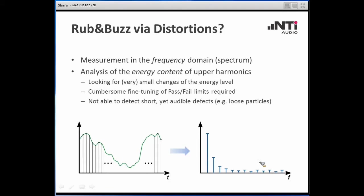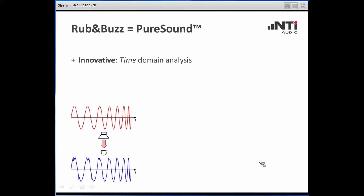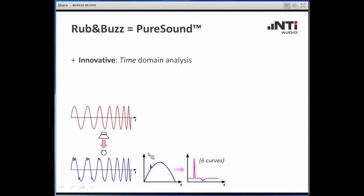For these types of defects — which are very clearly audible — you need a different method. NTI Audio was actually the first company to introduce a real, reliable, well-working solution. The core principle is that it works in the time domain, in contrast to the frequency domain distortion measurement. We create a GlideSweep signal, transfer it through the speaker, pick it up with the microphone, and amplify any disturbance — whatever shape it has. The smooth sine wave part becomes almost flat-lined, but anything awkward clearly stands out.